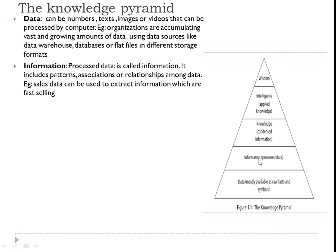Processed data is called information. The next level in the knowledge pyramid is information, which is nothing but processed data that includes patterns, associations, or relationships among data. For example, if I have sales data in a simple Excel file, that collected data is just the raw data at the lowest layer of the knowledge pyramid. From this sales data, if I want to extract which product is fast-selling, that becomes information — the next layer of the knowledge pyramid.